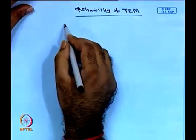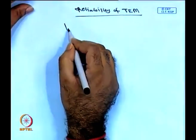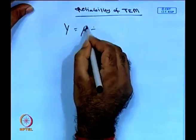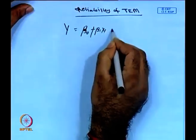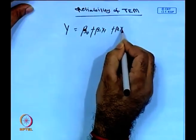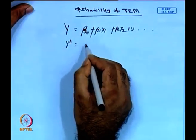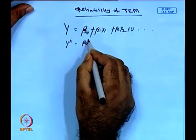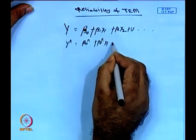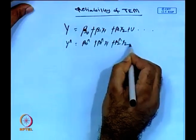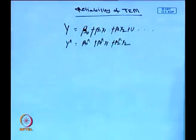In the last class we received the estimated model. We start with y equal to beta0 plus beta1*x1 plus beta2*x2 plus error term. Through this we received the estimated model: y-hat equal to beta0-hat plus beta1-hat*x1 plus beta2-hat*x2. The next step, once we have the estimated model, is to go for reliability testing.